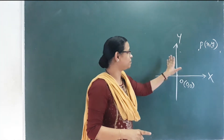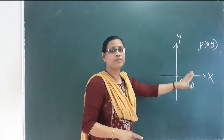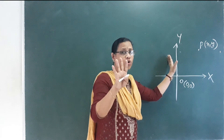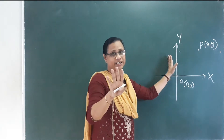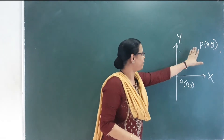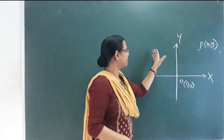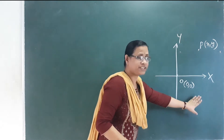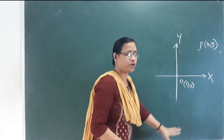In this Cartesian plane, the X and Y axes define four coordinates: the first quadrant, second quadrant, third quadrant, and fourth quadrant.